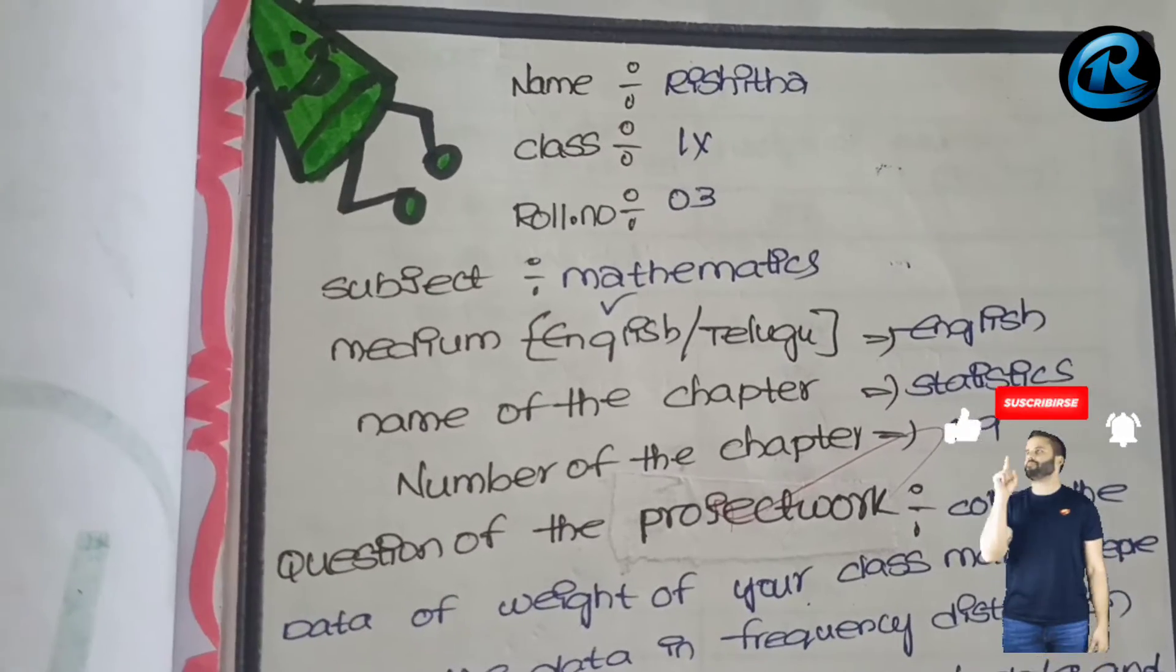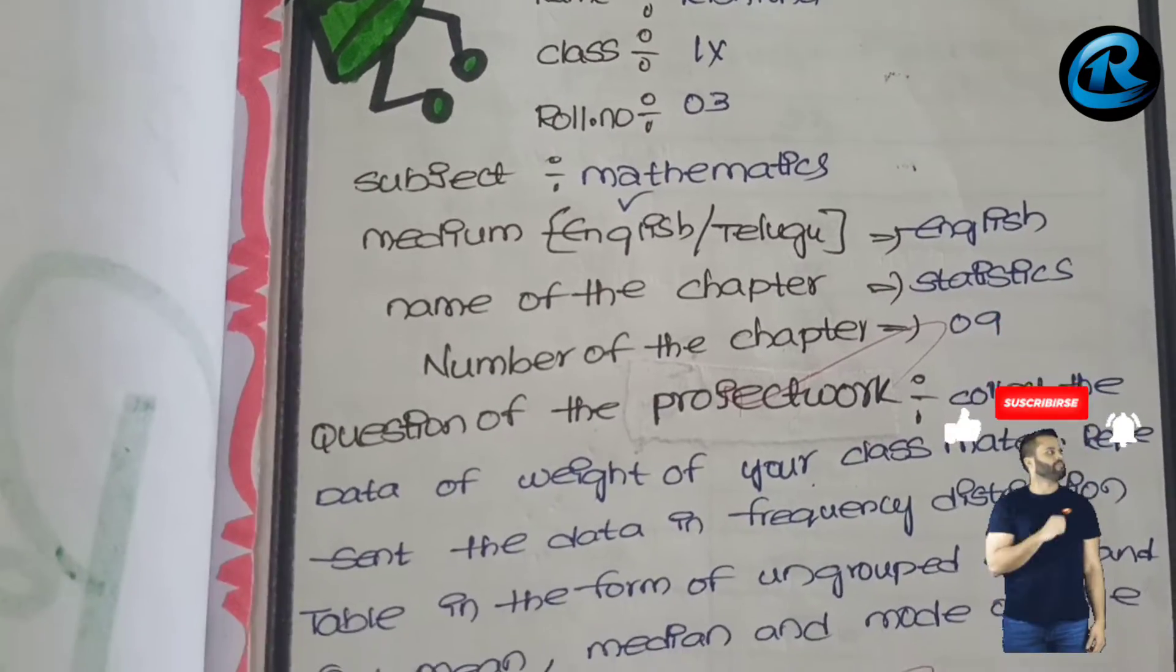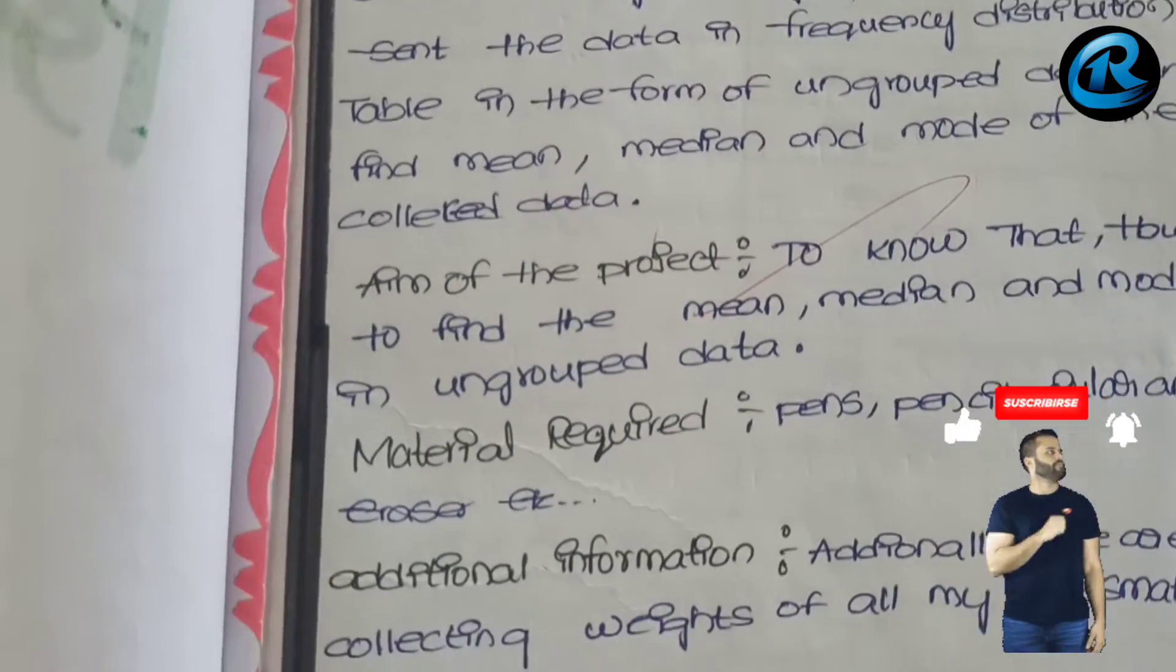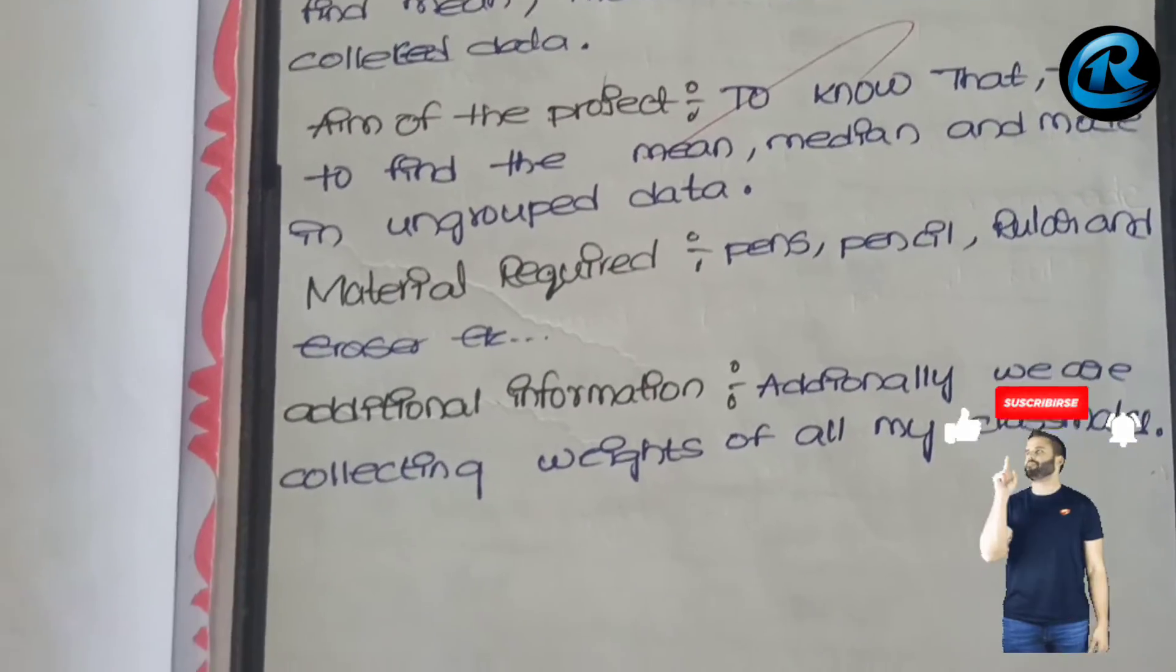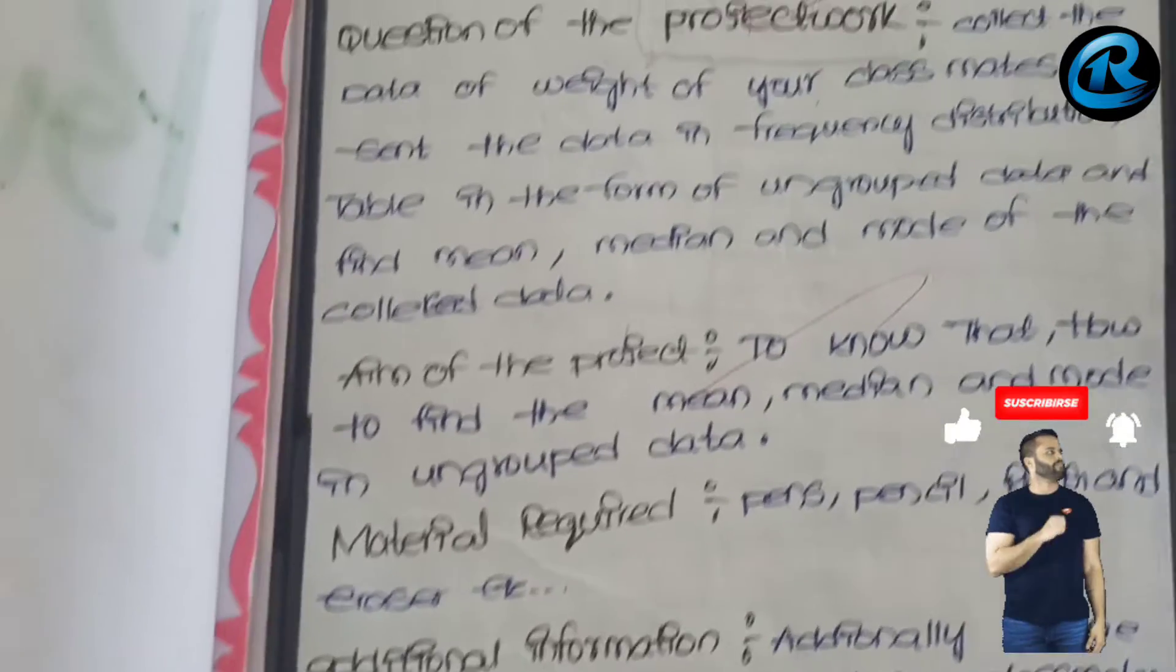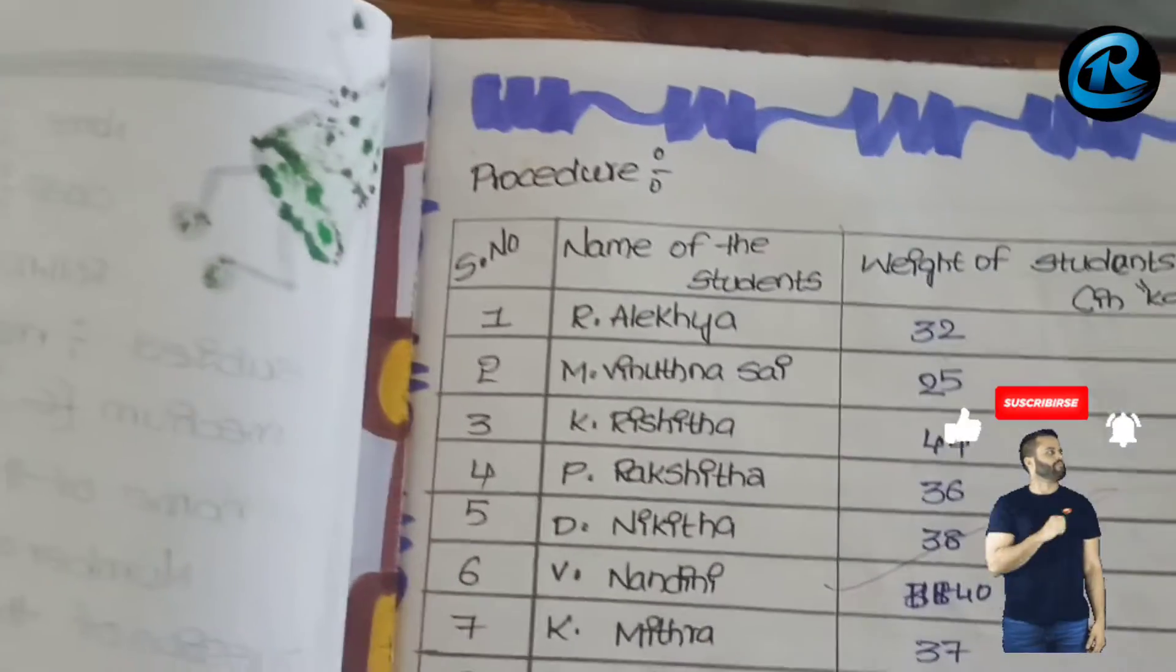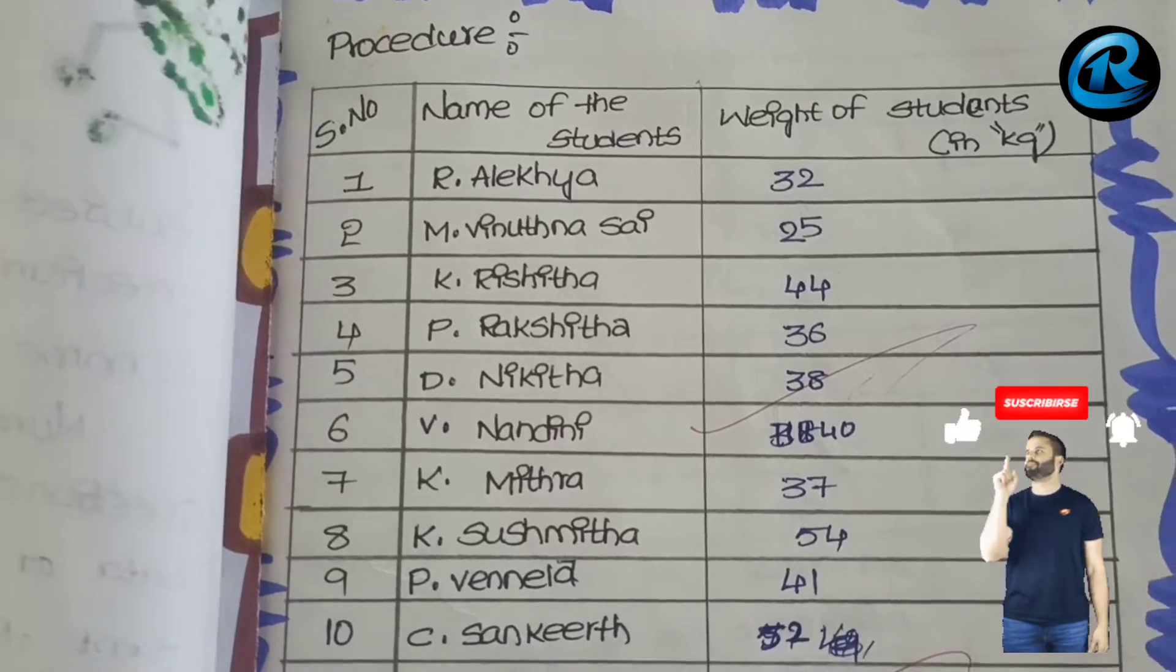Now here there is a project. Mainly you need to focus on the headings. There are many headings: name, class, roll number, student, medium, name of the project, number of the chapter, then question of the project, aim of the project, procedure of the project. All the headings are there.